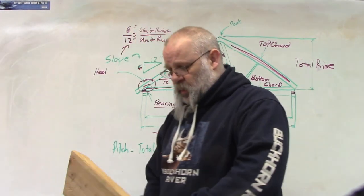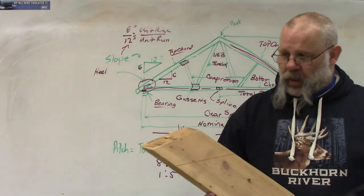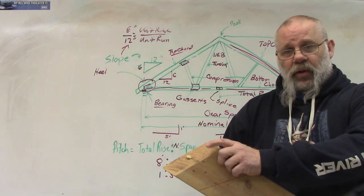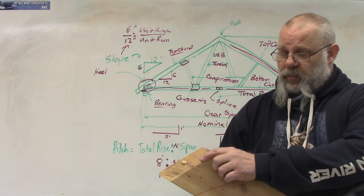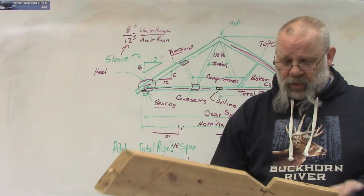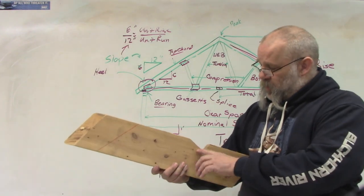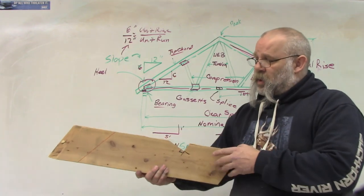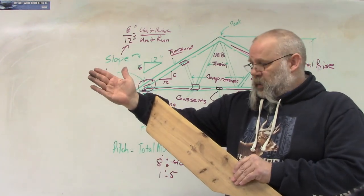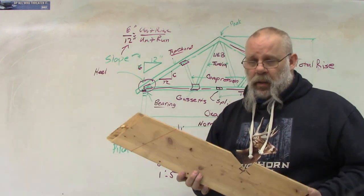The next one would be a hip jack. A hip jack again is going to have the single cheek cut because it also butts up to the hip rafter on one end, and then it has a bird's mouth at the other end. So it's got a bird's mouth and a single cheek cut so that it hits the hip rafter going up. That is a hip jack.